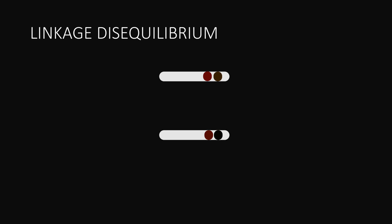An example is that genes for red and brown always occur together, rather than red and black — they are not independently assorted. The closer genes are to each other, the more likely they will be linked.